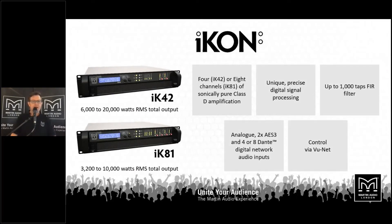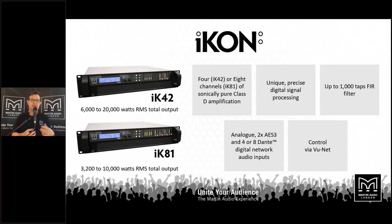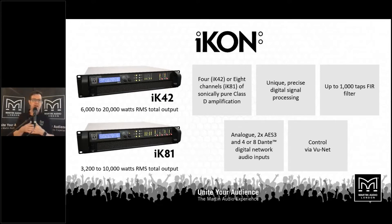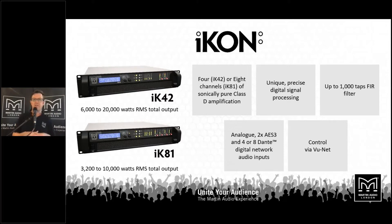Our ICON amplifiers are used exclusively with the Wavefront Precision series, not only because of their power and flexibility, but also for the process of getting all of those FIR coefficients up into the loudspeaker hang. The IK42 has four channels of 5K, and the IK81 has eight channels of 1250 watts. Every single output has 1000 taps of FIR filtering available, enabling control of sound right down to 100 Hz with about a 10 ms delay for full FIR processing. Features include class D, incredible lightweight design, AES and analog inputs, Dante, and control by VueNet.